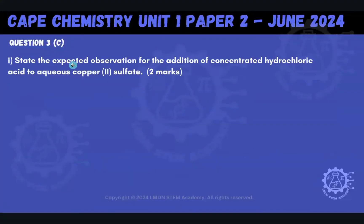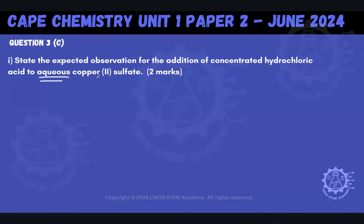Part C says: state the expected observation for the addition of concentrated hydrochloric acid to aqueous copper 2 sulfate. What's going on here is a ligand exchange reaction. Because we said aqueous copper sulfate, we're starting with a copper complex — the hexaaqua copper 2 complex — because that's how copper 2 sulfate exists in its hydrated aqueous form.